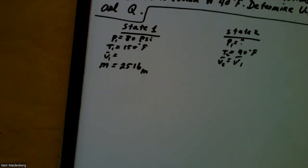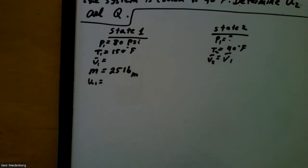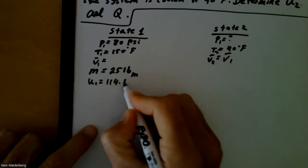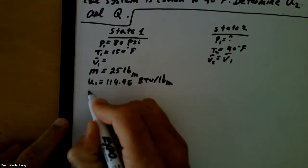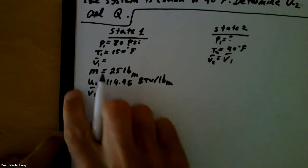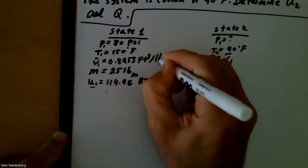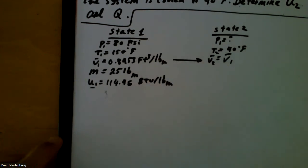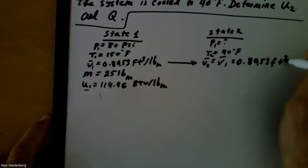From the superheated table at 80 PSI and 150°F, U1 is 114.46 BTU/lbm, and the specific volume V1 is 0.8953 ft³/lbm. Since the container is rigid, V2 is also 0.8953 ft³/lbm. The mass remains 25 lbm throughout.